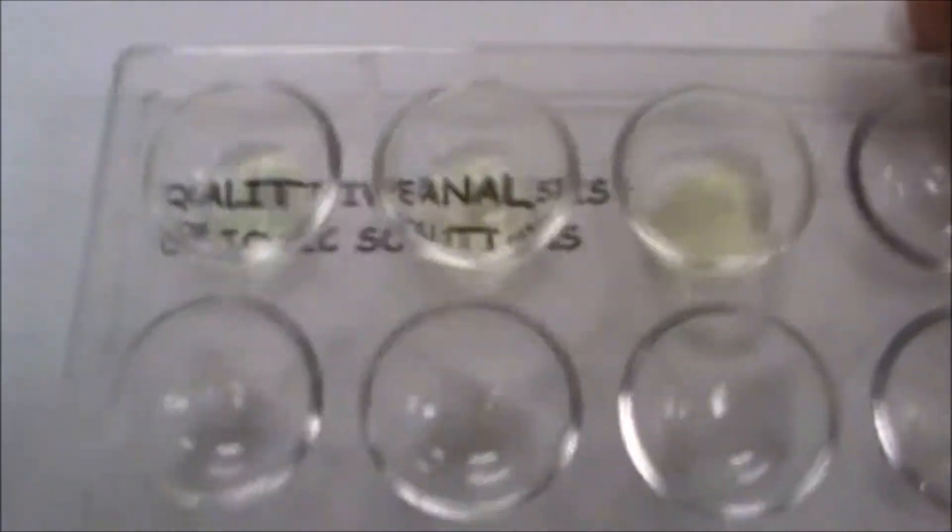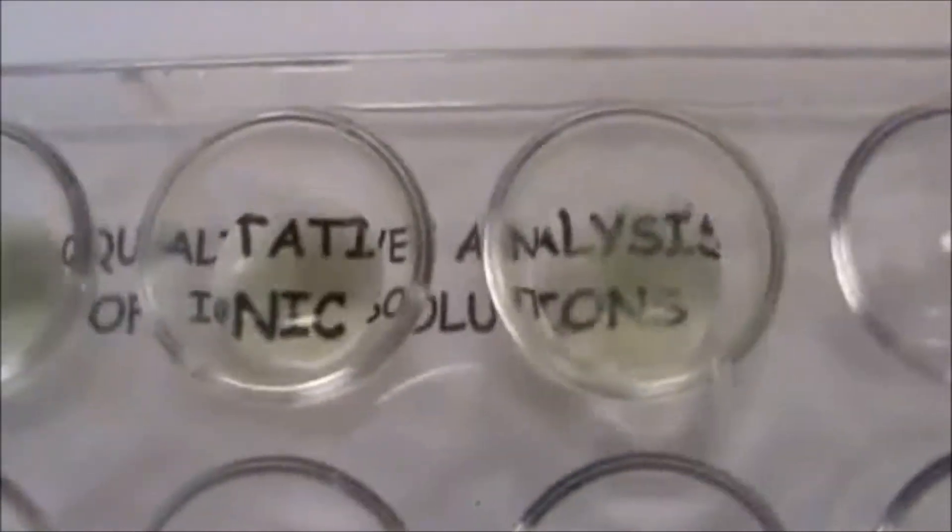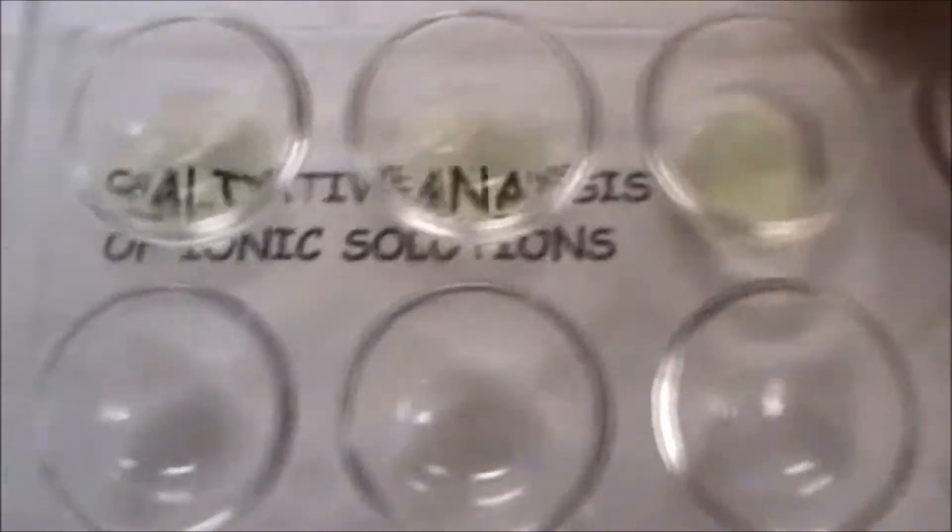That's pretty clear from there, but to kind of help show you that, if we set this on paper and then look at the letters on here, you can see those two are definitely clear, but this one is cloudy, so this one has formed a precipitate, the other two have not.